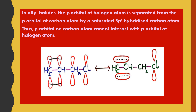In allyl halides, the p-orbital of the halogen atom is separated from the p-orbital of the carbon atom by a saturated sp3-hybridized carbon atom. Look at the figure: CH2=CH-CH2Cl. The chlorine atom is attached to a carbon which is sp3-hybridized, and this sp3-hybridized carbon lies between the chlorine atom and the unsaturated carbon atom. Therefore, the p-orbital of the halogen atom is separated from the p-orbital of the carbon atom by a saturated sp3-hybridized carbon, and the p-orbital on the carbon atom cannot interact with the p-orbital of the halogen atom.